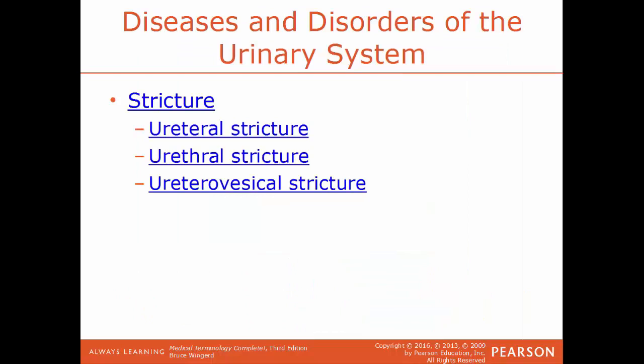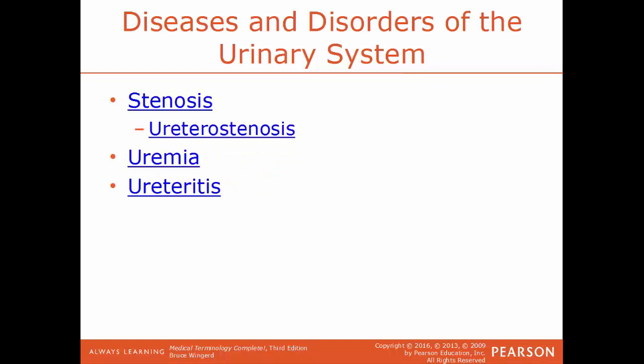Stricture is an abnormal narrowing of a bodily passage, especially a canal or tube, and can be caused by tumors, inflammation, or scar tissue. Depending on where the narrowing occurs, it gets a more specific name: ureteral stricture is a narrowing within the ureter; urethral stricture is a narrowing of the urethra; ureterovesical stricture is a stricture at the ureterovesical junction, where the ureter joins the urinary bladder. Stenosis refers to a restriction or narrowing — a synonym for stricture — but generally stenosis refers to a blood vessel or valve caused by inflammatory diseases or infections, while strictures are caused by scar tissue. Ureterostenosis is another term for a stricture of the ureter.